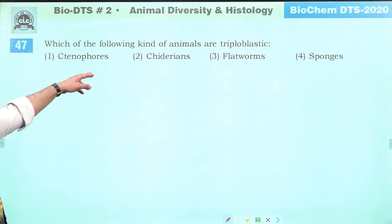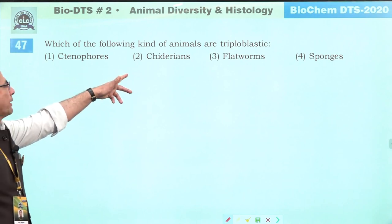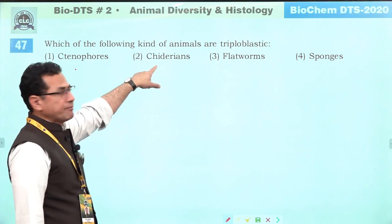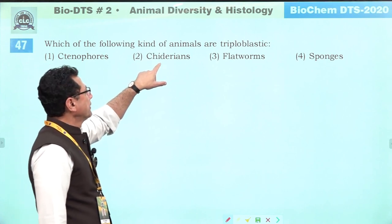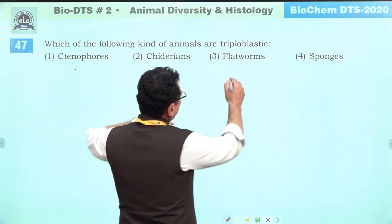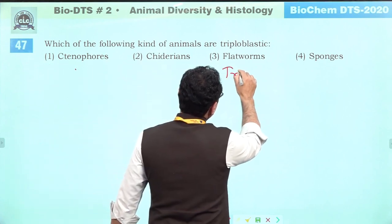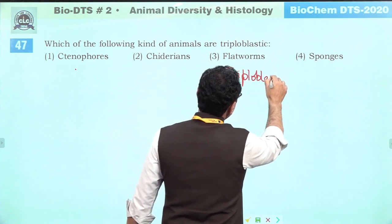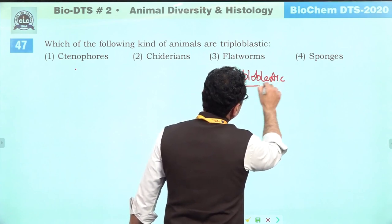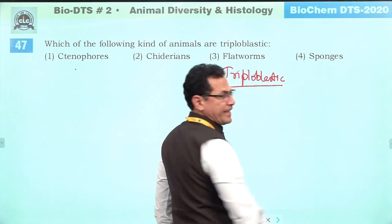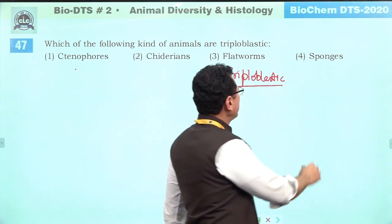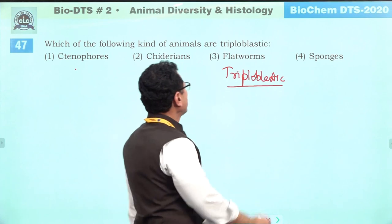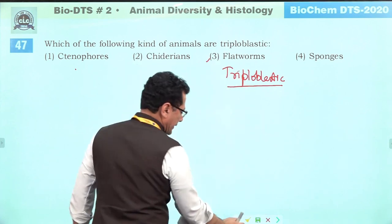Which animals are triploblastic? Ctenophores and cnidarians are diploblastic. Flatworms (Platyhelminthes) are triploblastic — body formation from three germ layers: ectoderm, mesoderm, and endoderm. Sponges are not truly diploblastic. Correct answer is three.